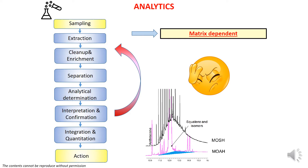From an analytical viewpoint, MOSH and MOAH determination can be a very long and cumbersome procedure. Often we arrive at the end and realize we need to start all over again, because for the specific matrix we are analyzing, some unexpected interferences were present in the MOSH or MOAH fraction, affecting the correct quantification and determination of our contaminants. Let's take a step back to understand the full analytical procedure.